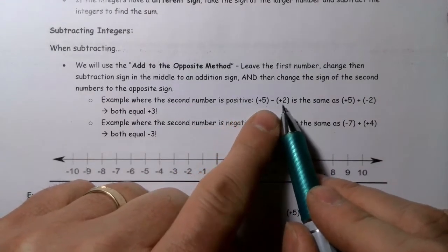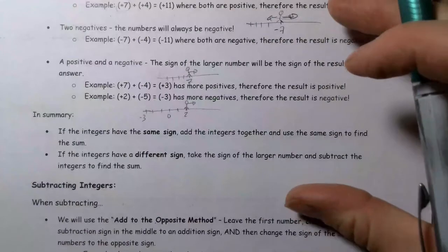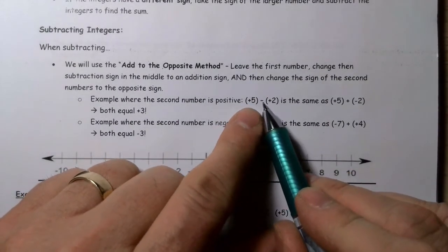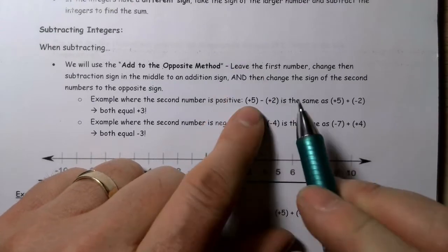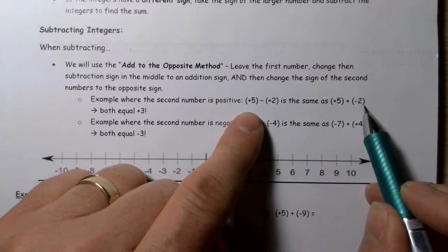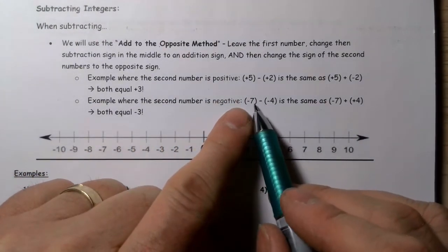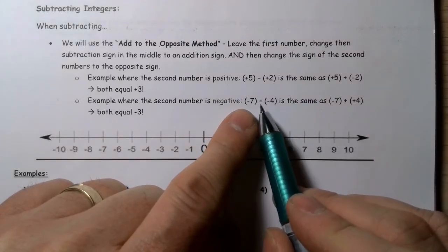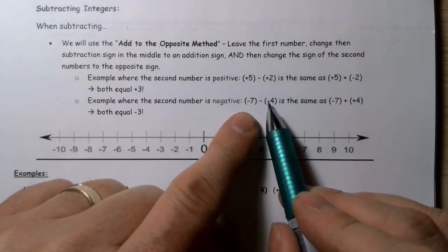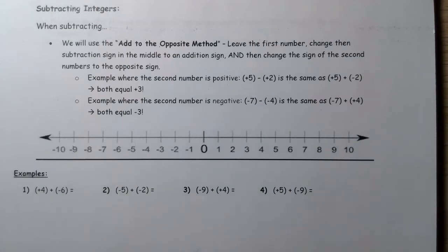The method works like this: if I've got five minus two, I can change this problem — instead of subtracting a positive two, I can flop those signs and change it to adding a negative. So five plus negative two. Similarly, starting at negative seven, instead of subtracting negative four, I'm going to add the opposite — positive four. So I add positive four.